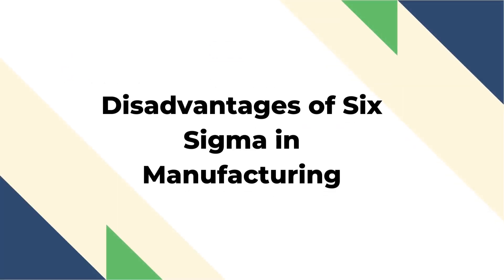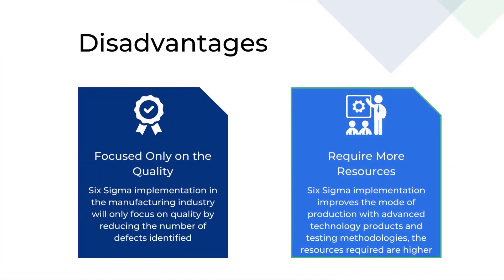Now let us discuss some of the limitations or disadvantages in the manufacturing process due to Six Sigma. The first disadvantage is that it is focused only on quality. Six Sigma implementation in the manufacturing industry will only focus on quality by reducing the number of defects identified. It may even lead to an increase in production costs either directly or indirectly, and there are chances of increasing the time consumed to manufacture a product. Thus, either one of these factors has to be traded with the Six Sigma implementation.